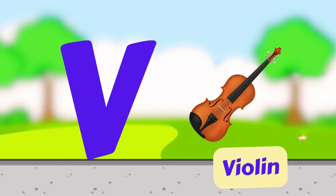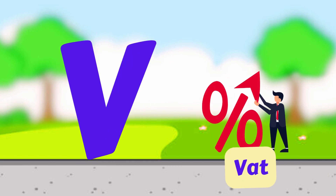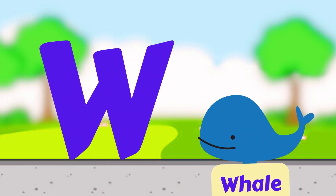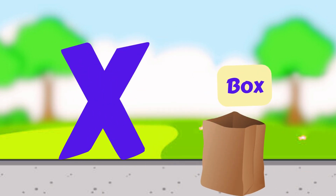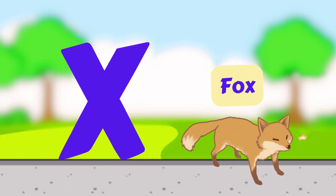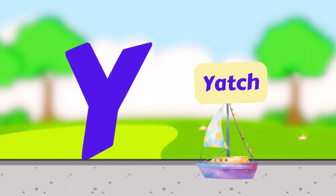T is for Tree. T, T, Tree. T is for Train. T, T, Train. U is for Umbrella. U, U, Umbrella. U is for Up. U, U, Up.